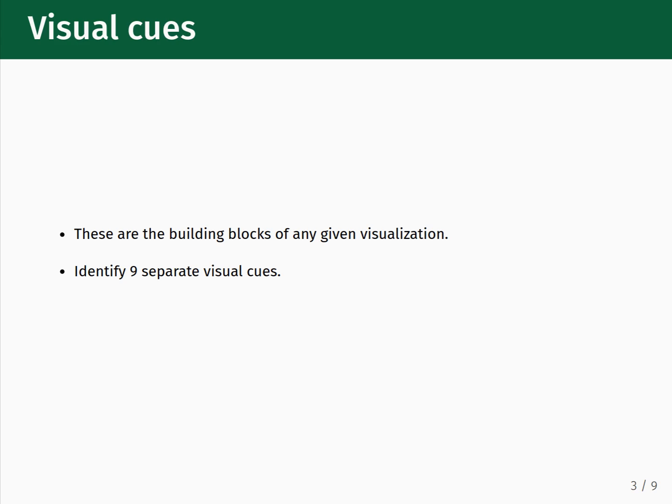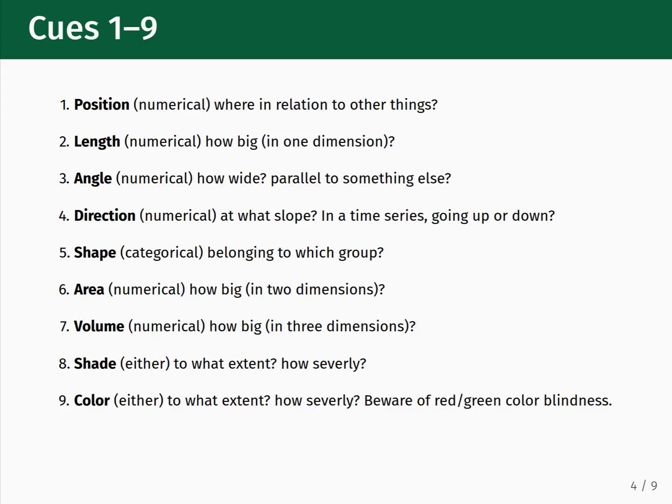In general, visual cues can be categorized into one of nine separate visual cues. In any given plot, only a subset of these cues may be present — it is not required that all nine show up in one plot. The nine cues and their data types are as follows.